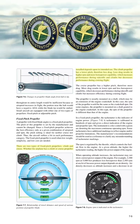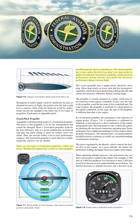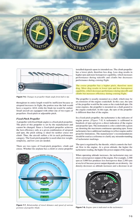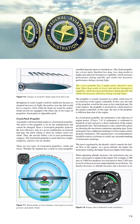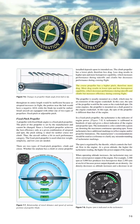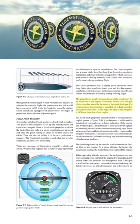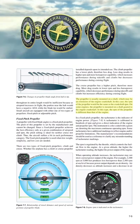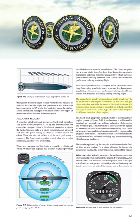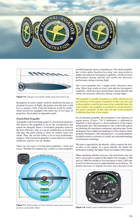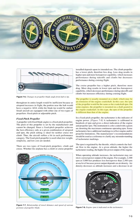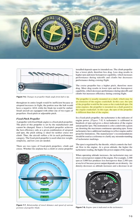The cruise propeller has a higher pitch, therefore more drag, resulting in lower RPM and less horsepower capability, which decreases performance during takeoffs and climbs but increases efficiency during cruising flight. The propeller is usually mounted on a shaft that may be an extension of the engine crankshaft, in which case the RPM of the propeller would be the same as the crankshaft RPM. On some engines, the propeller is mounted on a shaft geared to the engine crankshaft, so the propeller RPM differs from engine RPM.